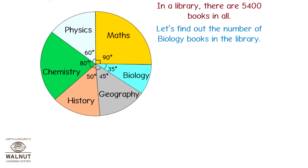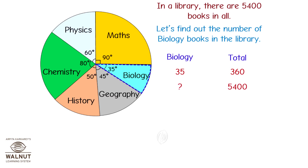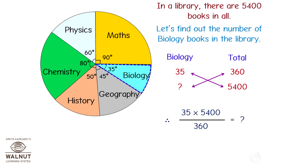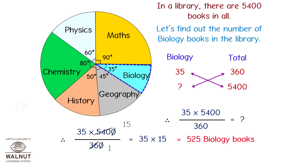Let's find out the number of biology books in the library. We have to find the number of biology books out of 5,400. By cross multiplication, we get 35 into 5,400 divided by 360. Simplify this and we get 525. That is, there are 525 biology books. This way, you can easily find out the quantity of all the books.